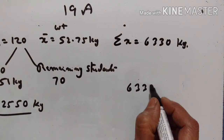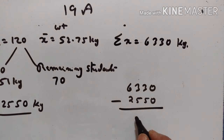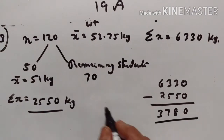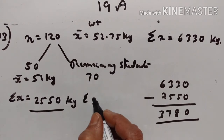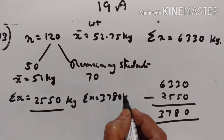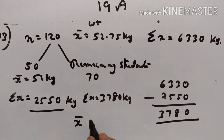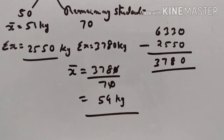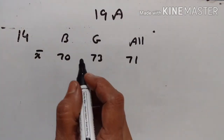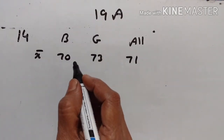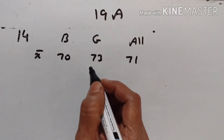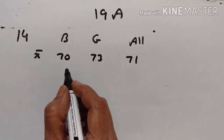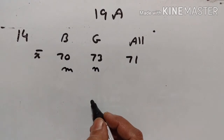Weight of 120 students minus weight of 50 students equals weight of 70 students. So 6330 minus 2550 equals 3780 kg. Therefore the mean weight of the remaining 70 students is 3780 divided by 70, which is 54 kg.